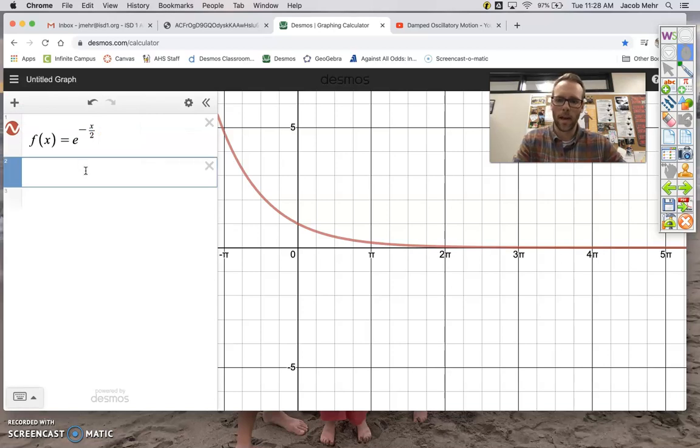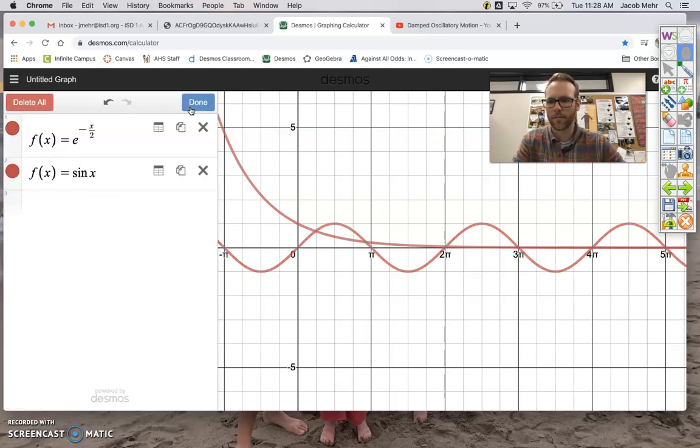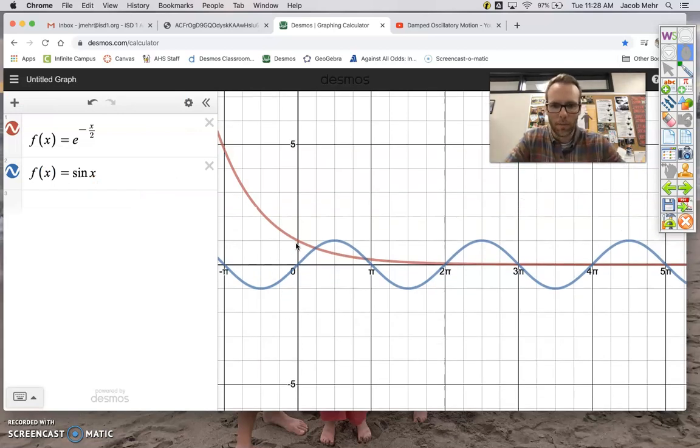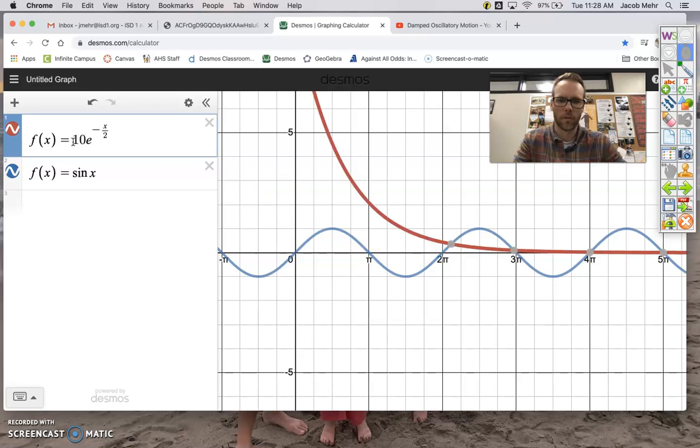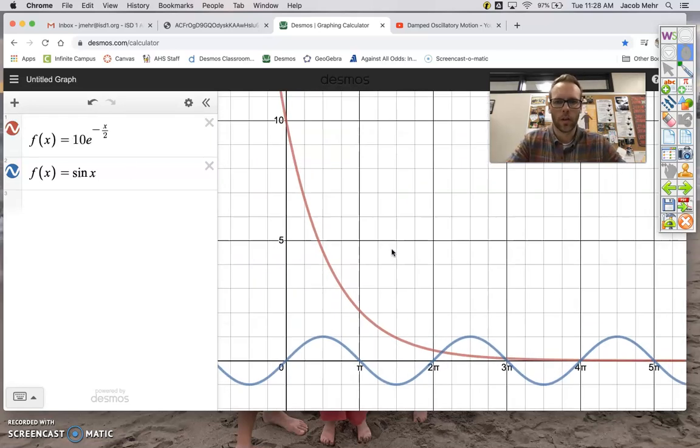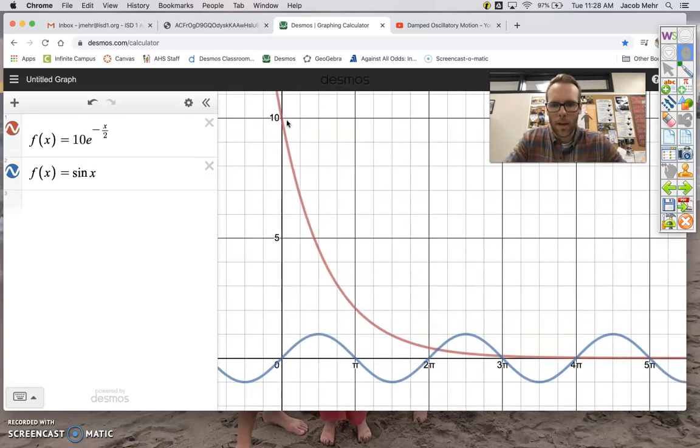And let's graph the sine of x. All right, so what's going to happen here? Well, you know what, I'm going to just adjust here on the fly. Let's stretch this out here a little bit more. There we go. All right, so what's going to happen with this?